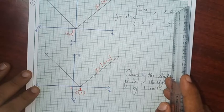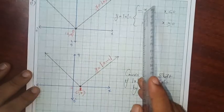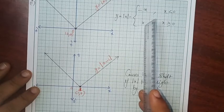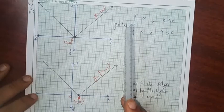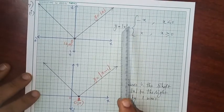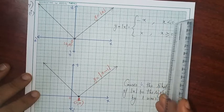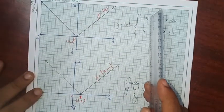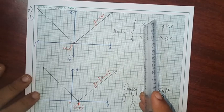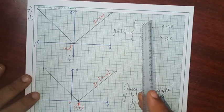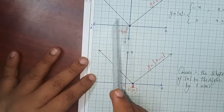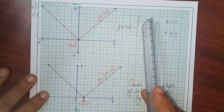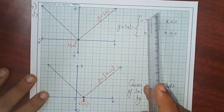For x less than 0, that means all negative numbers, it should be minus x. For x greater than 0, y equals plus x. Modulus of x should always be positive. For example, if x = -1, then minus of minus 1 is +1, positive. If x = -7, then minus of minus 7 is +7, positive. So modulus of x is always positive.